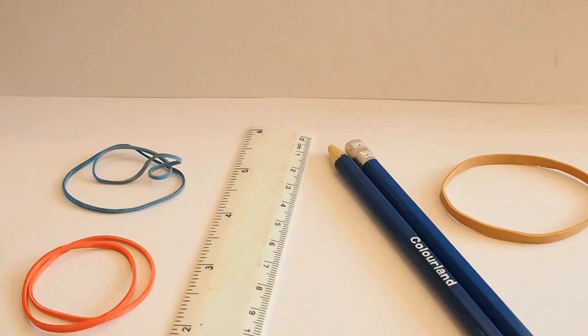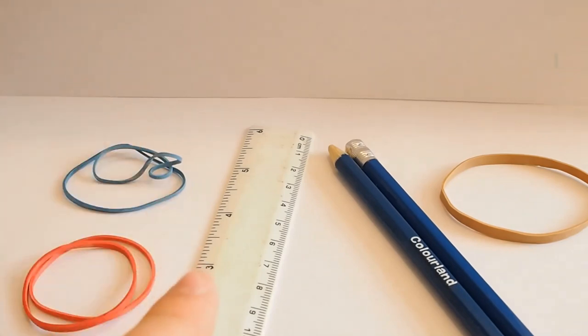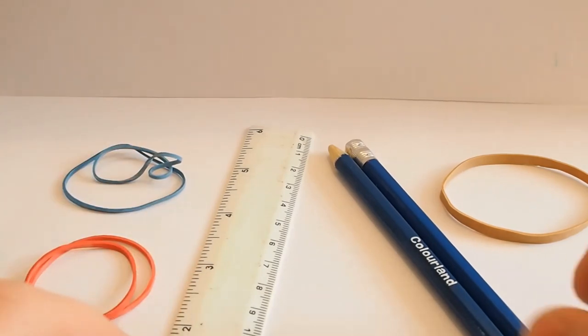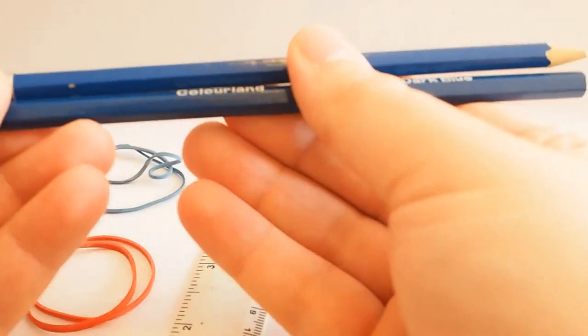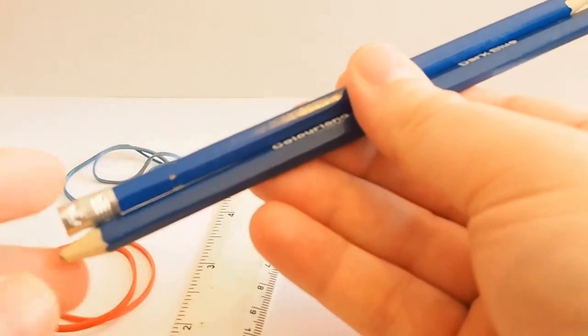So, we're going to begin by making the force meter. We're going to need some elastic bands, a ruler, and two pencils. What we're going to do, firstly, is we're going to take these two pencils, and we want them to be about the same length.